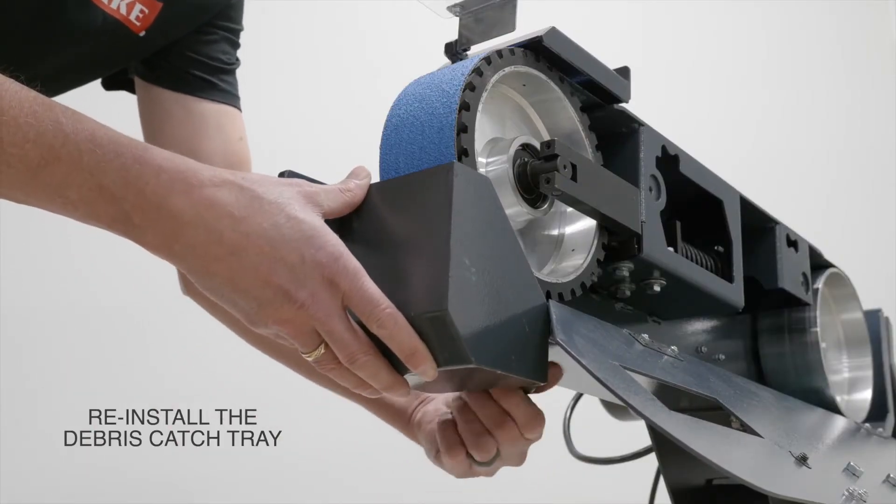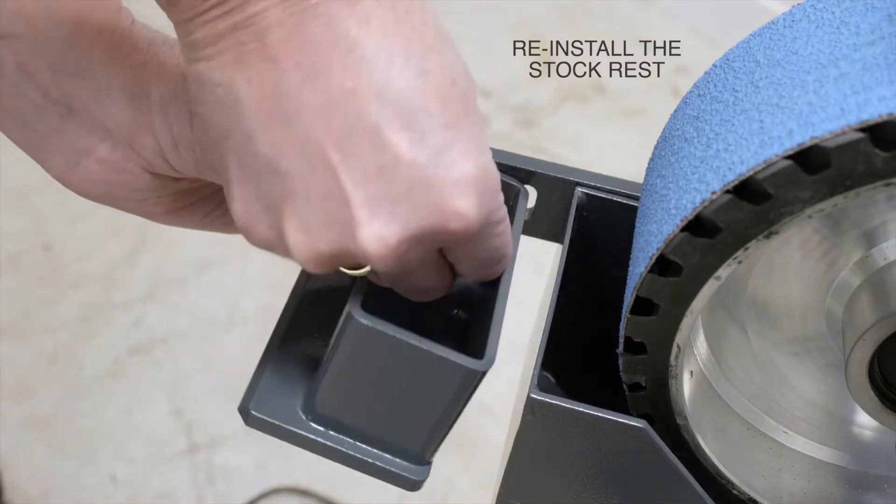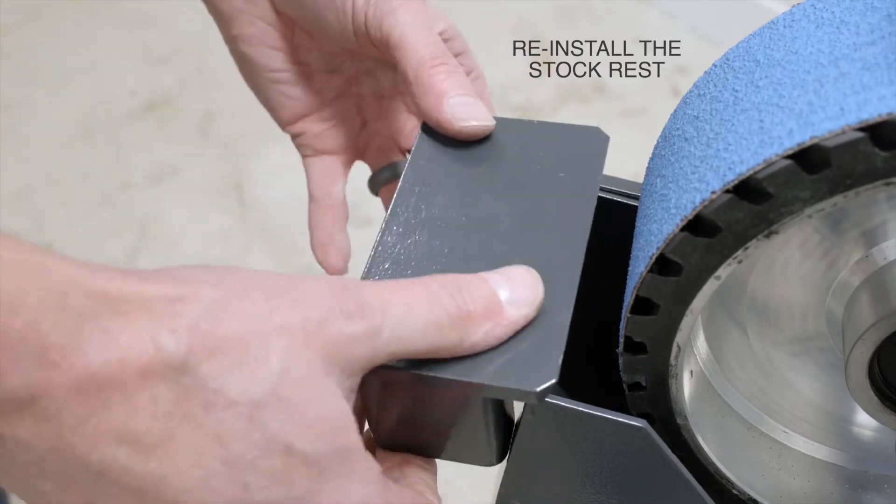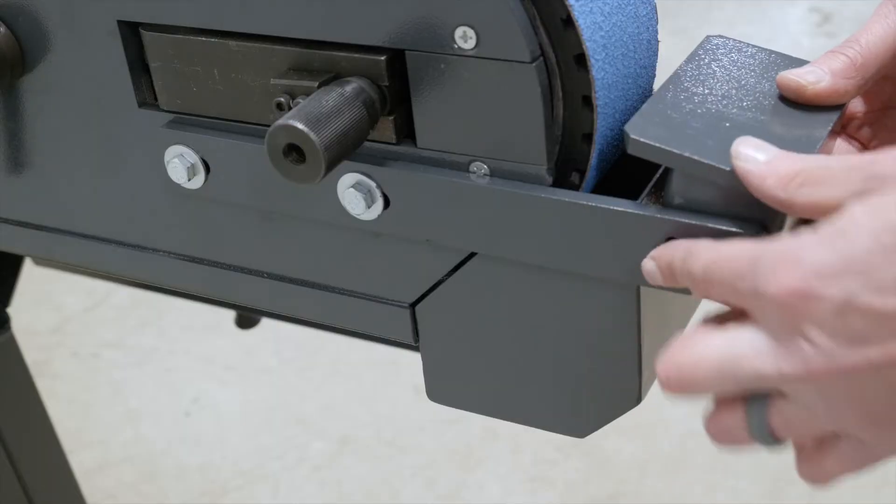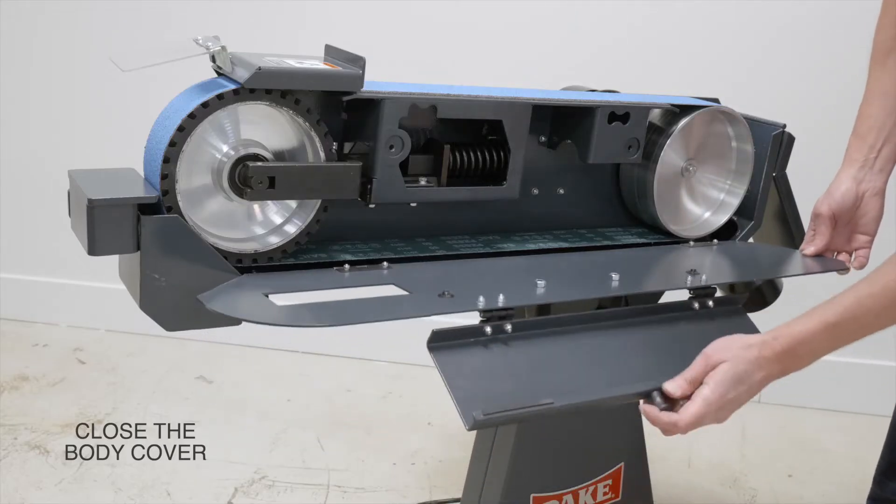Next, we can reinstall the debris catch tray and the stock rest. Now you can close the body cover and make sure everything is good and tight.